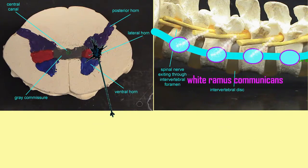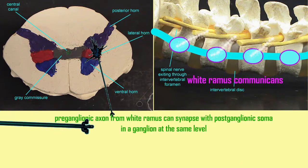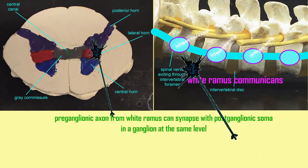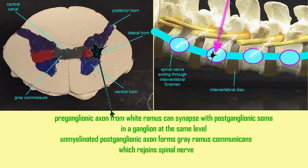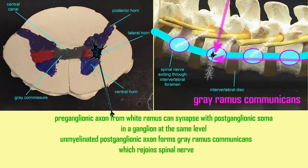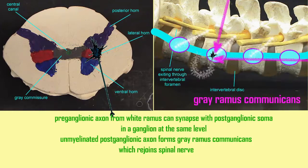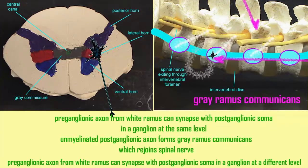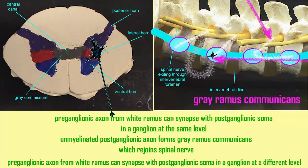The preganglionic axons from this white ramus then synapse with the postganglionic soma in the ganglion. A ganglion is the name of a location of soma outside the central nervous system. This ganglion could be located at the same level of the spinal cord as the nerve in the white ramus. From the postganglionic soma, an unmyelinated postganglionic axon could form the gray ramus communicans, which would rejoin the spinal nerve. It's called gray because without myelin it has a darker color.